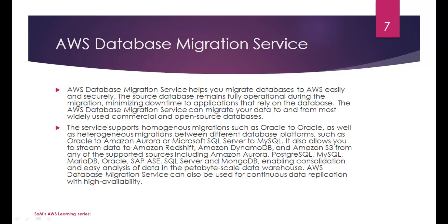Your current application, running on Oracle, SQL Server, or any conventional database, can be migrated without downtime. You start the DMS migration operations, the database stays up and running, migration happens in parallel — no downtime, no waiting for maintenance windows. The service supports homogeneous migrations such as Oracle to Oracle, as well as heterogeneous migrations such as Oracle to Amazon Aurora or Microsoft SQL Server to MySQL. It also supports streaming data to Amazon Redshift, DynamoDB, and S3 from supported sources including Aurora, PostgreSQL, MySQL, MariaDB, Oracle, SAP ASE, SQL Server, and MongoDB.